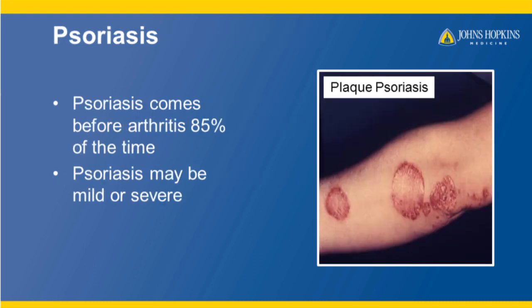Psoriasis comes before the arthritis about eighty-five percent of the time. Psoriasis may be mild or severe. This picture is a picture of plaque psoriasis, the typical type of psoriasis seen with psoriatic arthritis.